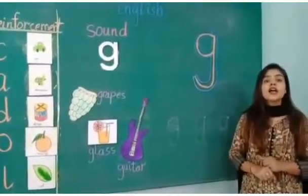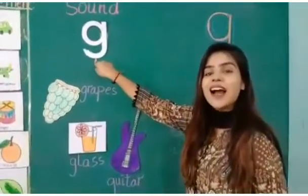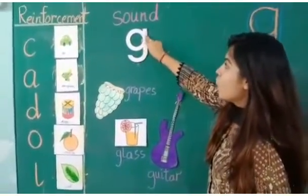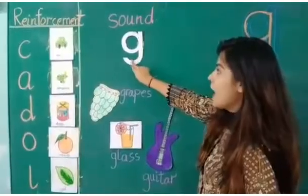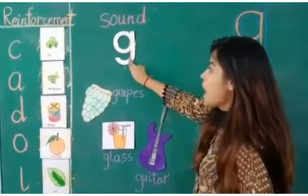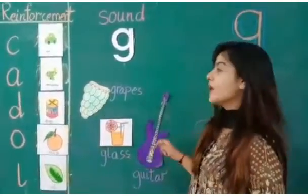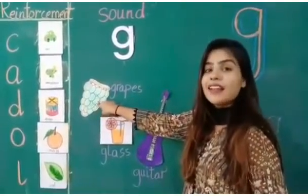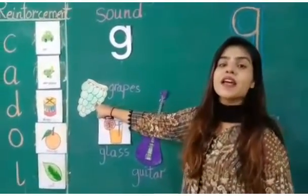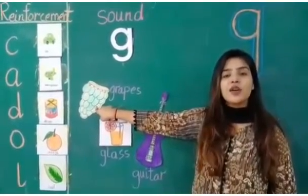Now we are going to learn the vocabulary of sound G. Come on, let's see. This is sound G — G is make a K, go up, come down, and make a round. These are the vocabulary of sound G. What is this? This is grapes. G — grapes. Repeat after me: grapes.